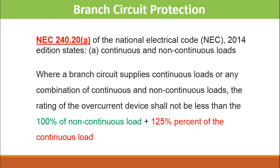The NEC standard that defines branch circuit protection is NEC 240.20(a), which states that where a branch circuit supplies continuous loads or any combination of continuous and non-continuous loads, the rating of the overcurrent device — which can be a circuit breaker or fuse — shall not be less than 100% of the non-continuous load plus 125% of the continuous load.